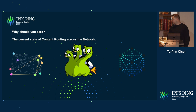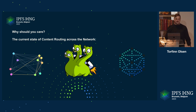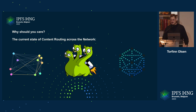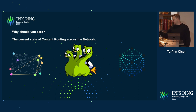Why should you care, and what is the current state of content routing today? I think Masi has already covered a lot of that in his earlier talk, but I'll recapture it for context. We've got the DHT — which is old reliable. It's chugging along and you can count on it to persistently be there and do what it's intended to do. We can always rely on it. This is one content routing system that provides peer-to-peer functionality.